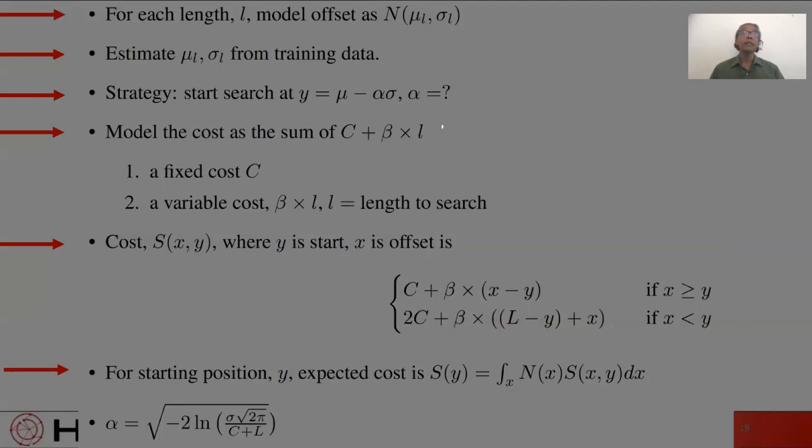So given that y is some fixed starting position and x is a random variable, we can compute the expected cost of s using the integral shown. And lastly, if we minimize s with respect to y and we invoke some high school calculus, we're actually quite lucky to end up with a nice closed form solution for alpha.